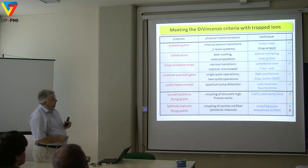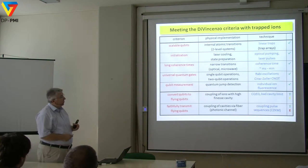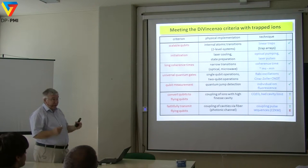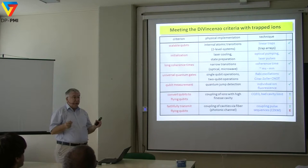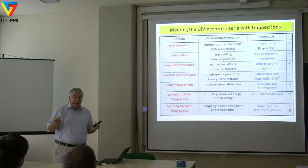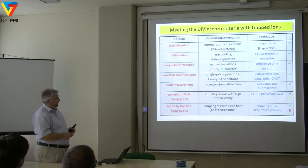You have to apply laser cooling techniques — the laser cooling part is important to prepare things. State preparation is usually done by optical pumping. You use narrow transitions — either optical or microwave — with very long coherence time. You have to deal with so-called forbidden transitions — clock transitions — and I'll show you how to realize that in atoms. Then you need single-qubit operations with very high fidelity. This is the notion of Rabi oscillations.